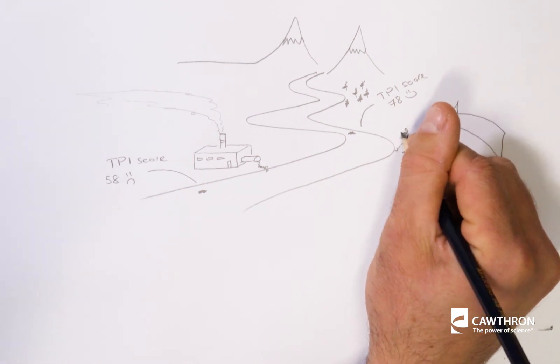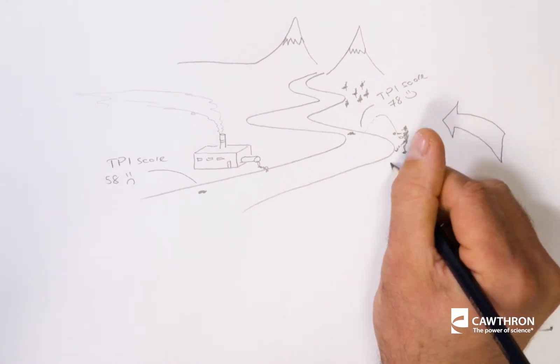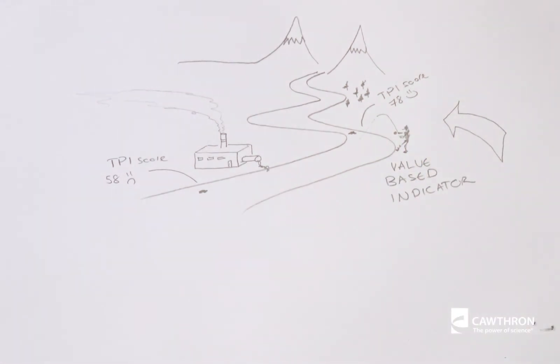And like it or not, humans are also part of these systems. So we need indicators that tell us how well our rivers are providing for the things we value as New Zealanders, like going fishing.